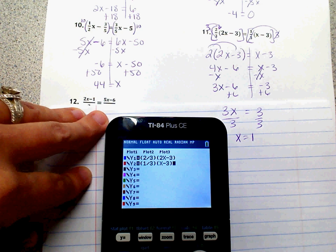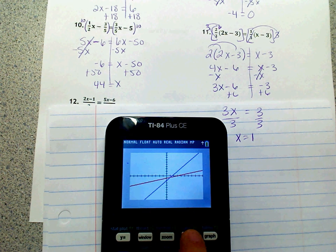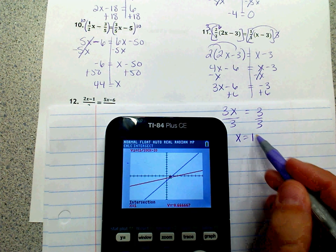So when I graph those, they do intersect. So let's see if we're correct. Second trace, 5, enter, enter, enter, enter, and it says x equals 1. So that is our answer. So we know we're correct.